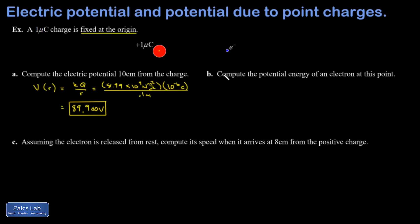In Part B, we're asked for the potential energy of an electron that's sitting at that point. And so the idea here is that I don't have to go back and work from scratch to find the potential energy.